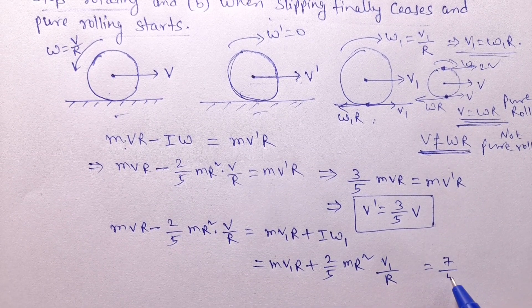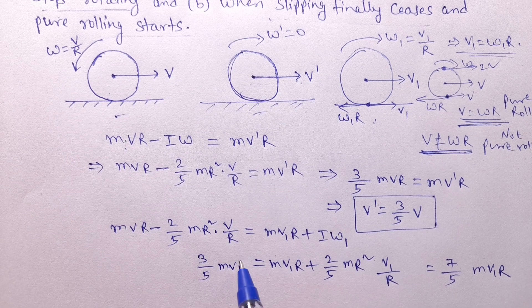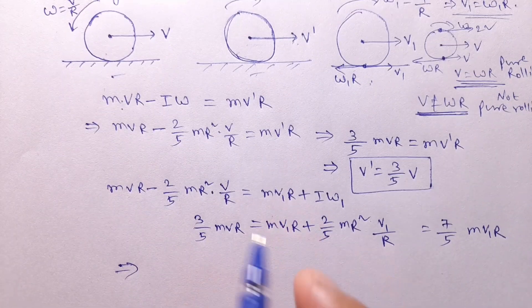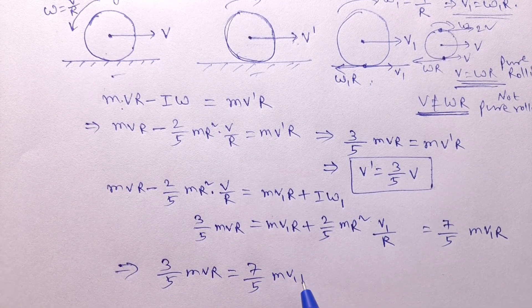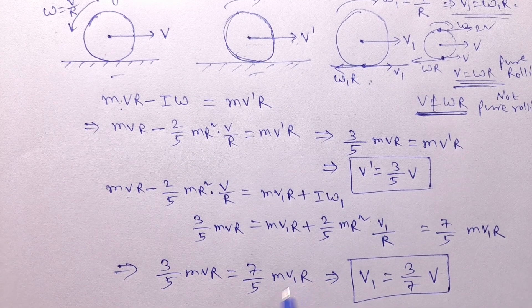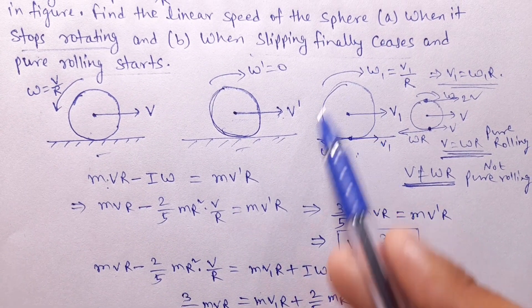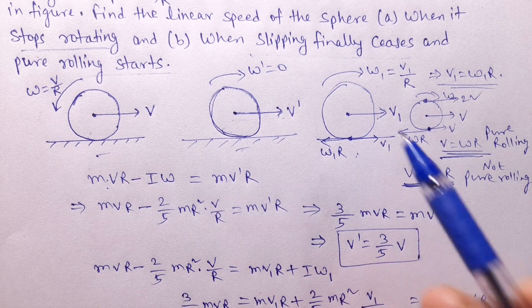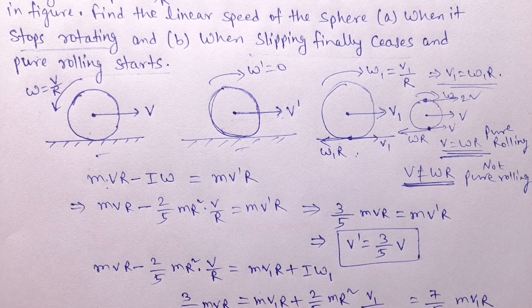The right-hand side becomes m·v1·r plus (2/5)·m·r²·(v1/r), which gives (7/5)·m·v1·r. The left-hand side gives (3/5)·m·v·r. So: (3/5)·m·v·r equals (7/5)·m·v1·r. Cancelling m and r, v1 equals (3/7)·V. When pure rolling starts, the linear speed v1 equals 3/7 V. Solving this question using angular momentum conservation is the easiest approach.